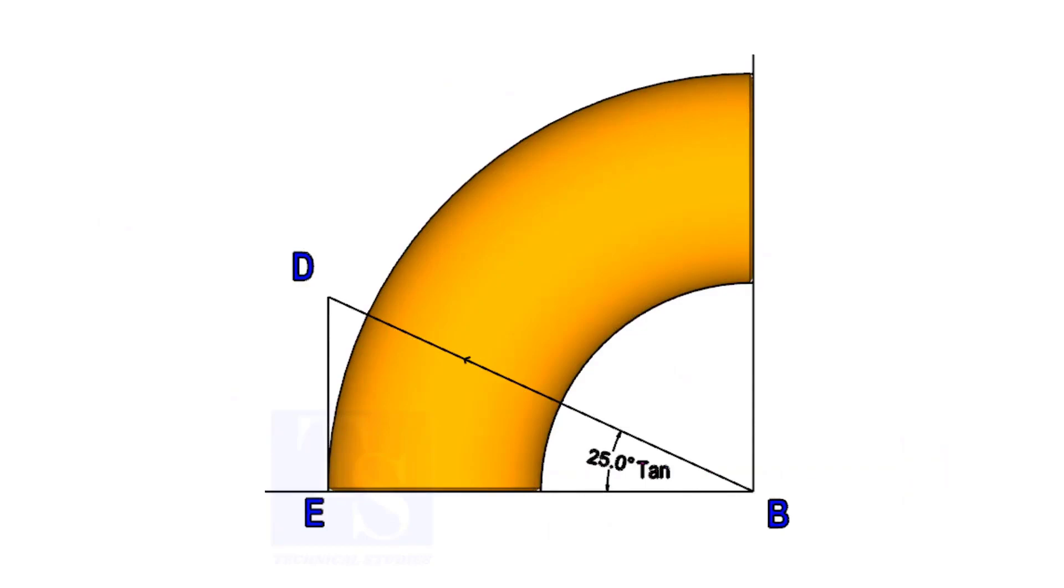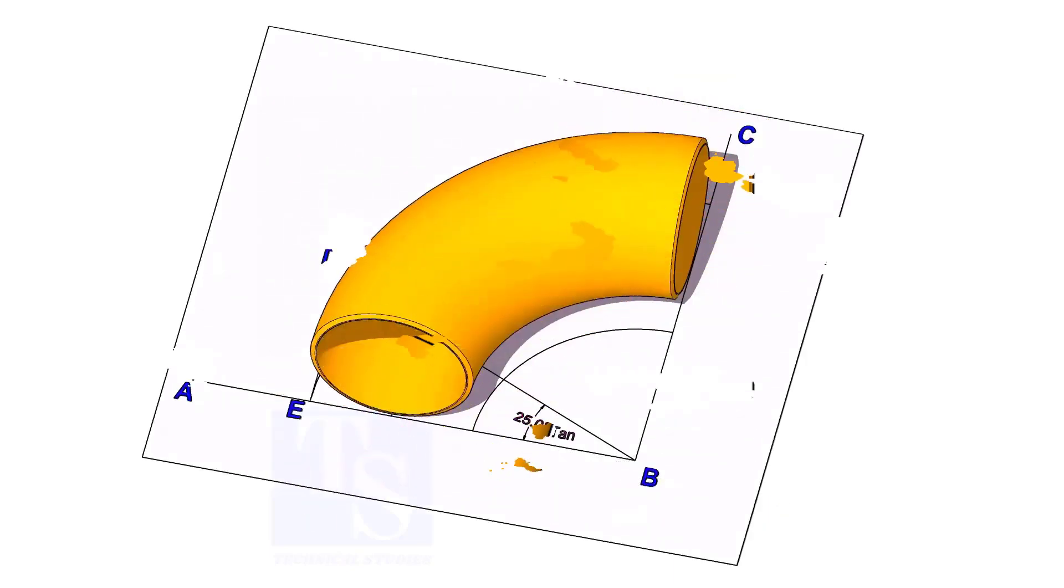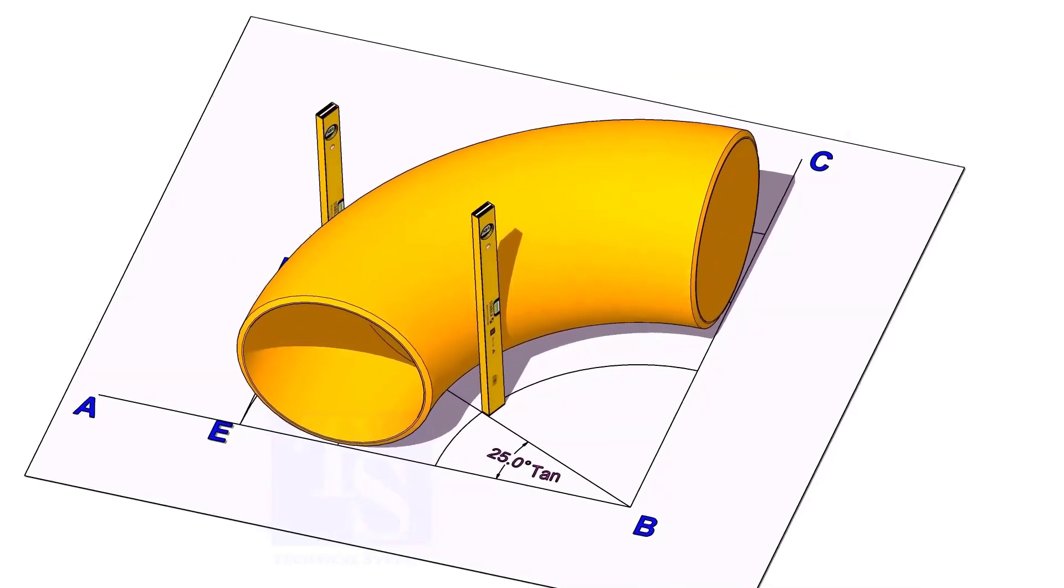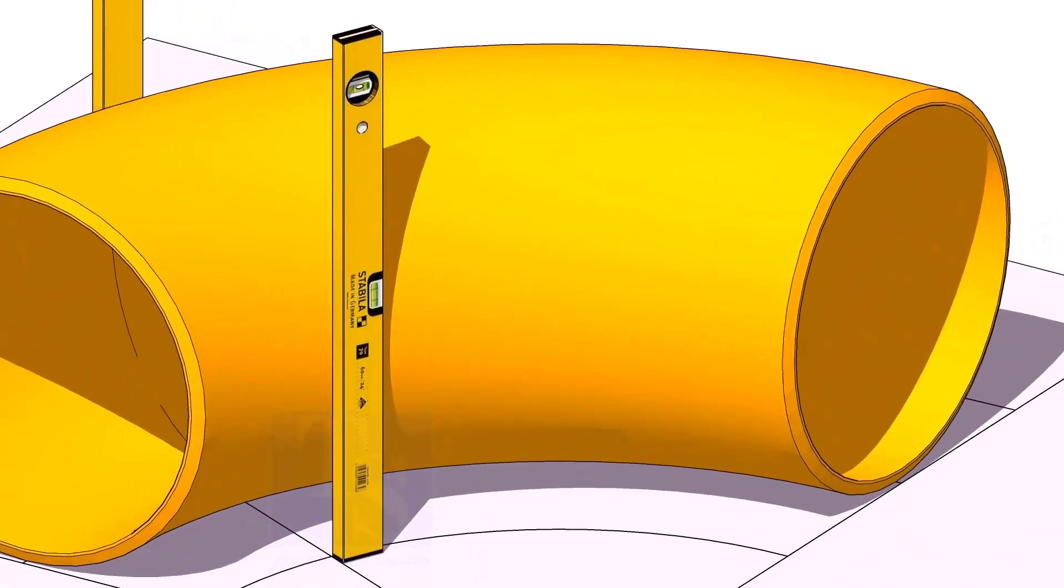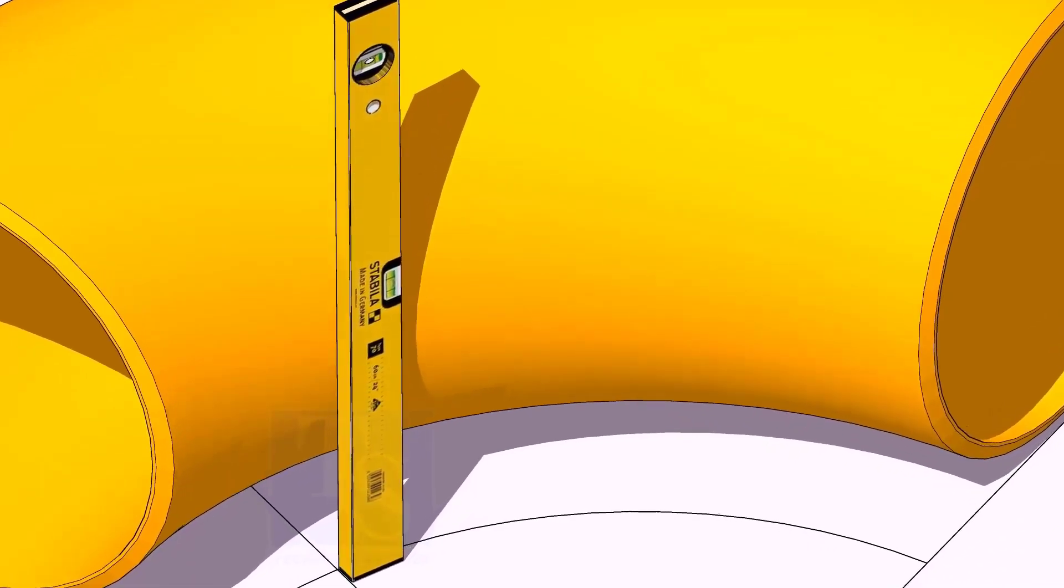Now, put the elbow exactly on the layout as shown. Hold two large level bottles at the edge of the elbow on both sides vertically, and strike a mark where the level bottle edge touches the elbow.